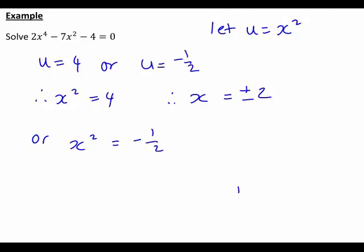But what about x squared equals negative 1 half? Now, if you're talking about a situation just with real numbers, such as x-intercepts of a graph, then you would say that x squared equals negative 1 half has no real solutions, meaning that the only solutions to your degree 4 equation that you'd be interested in would be these ones.